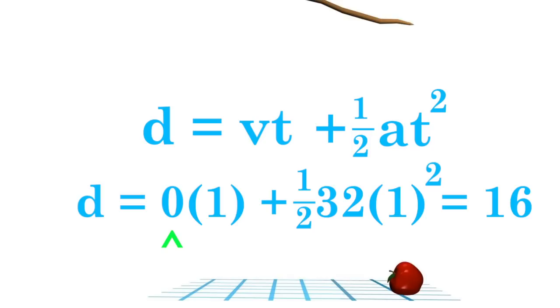First, the velocity term is zero because the apple starts off with a zero velocity. Then we have the acceleration term, which is one-half times 32 feet per second squared times one squared, which multiplies out to 16 feet.